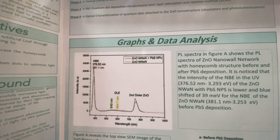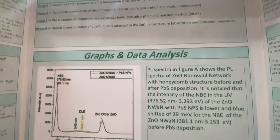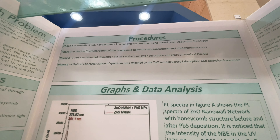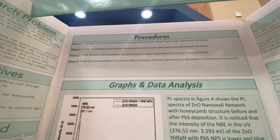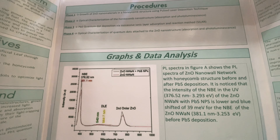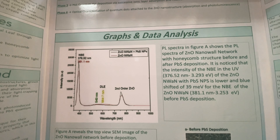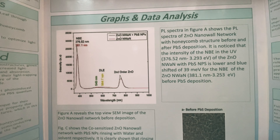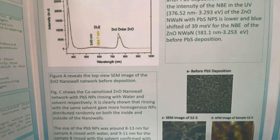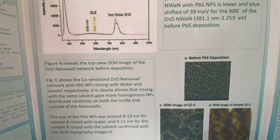An influential scientist in this area, Daniel Nocera, has invented a device called the artificial leaf. The artificial leaf has the potential to store and convert solar energy and produce hydrogen to fuel vehicles, or even be a basis for more complex fuels.